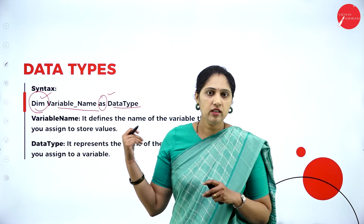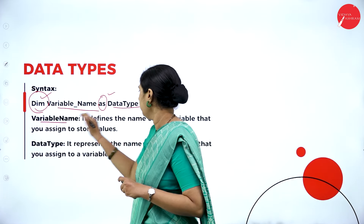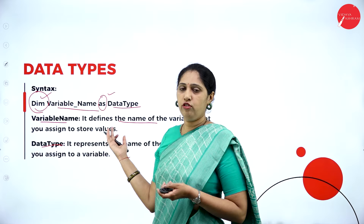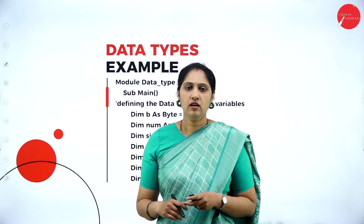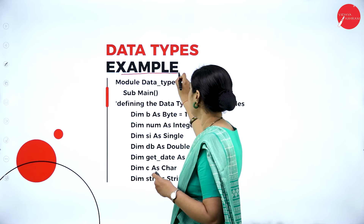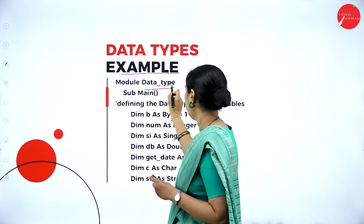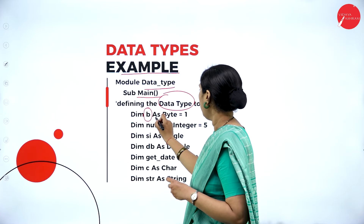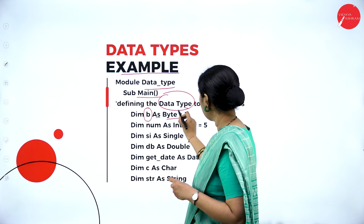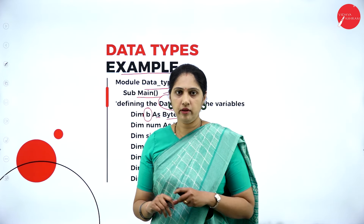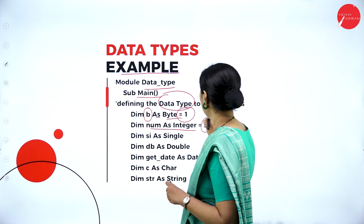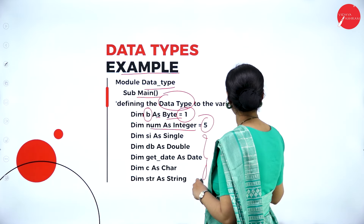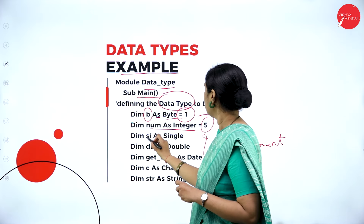What are data types? We already discussed this in C-sharp — same definition, but different syntax. A data type is used to define the type of a variable. When I say it is an integer, I should have only an integer value. A data type refers to which type of data or value a variable can take. In VB.NET, the syntax is: dim variable_name as datatype. The keywords dim and as are specific to VB.NET.